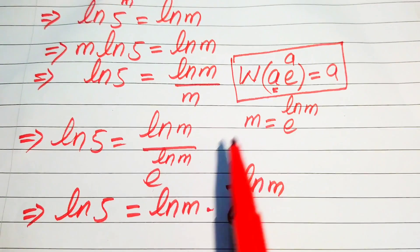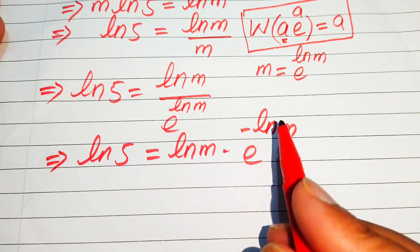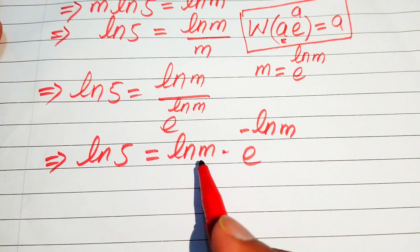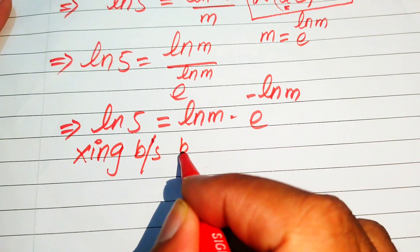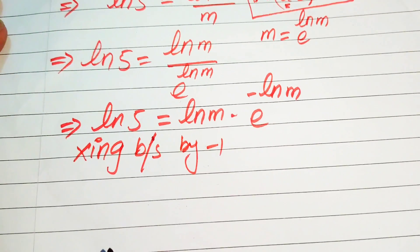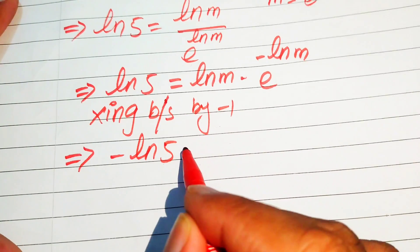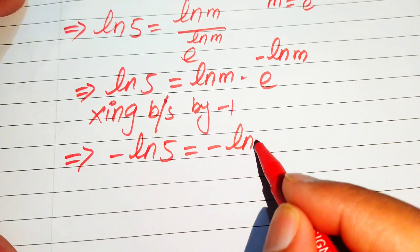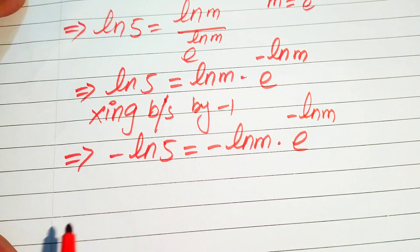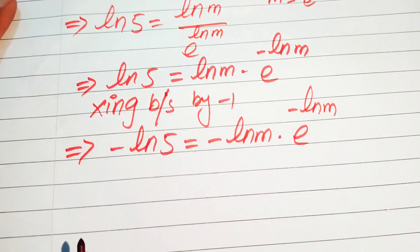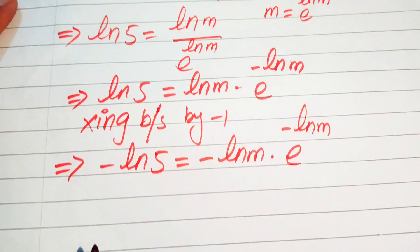In order to match the required condition, we need to make the exponent of e negative, so we multiply both sides by minus 1. When we multiply both sides by minus 1, it becomes: minus log 5 equals minus log m times e to the power of minus log m. This is the condition we need.